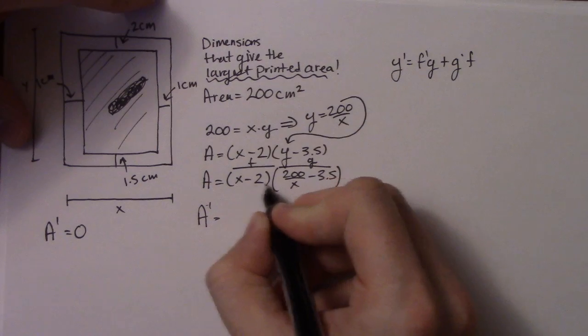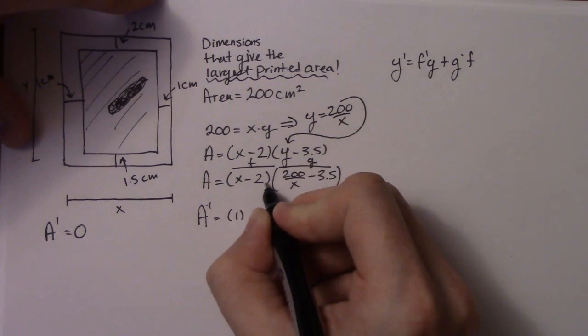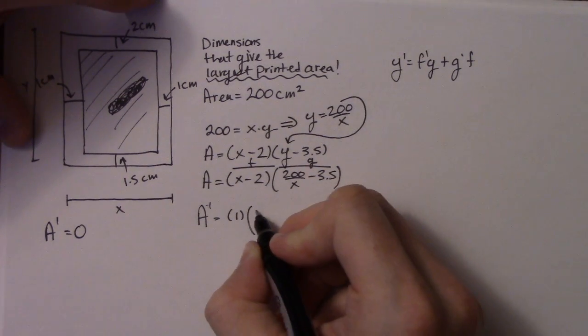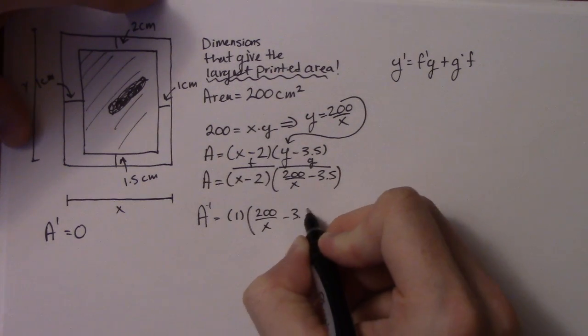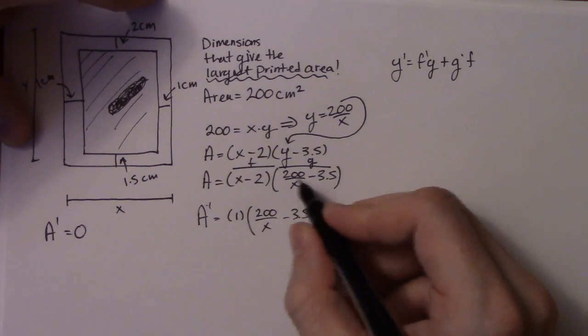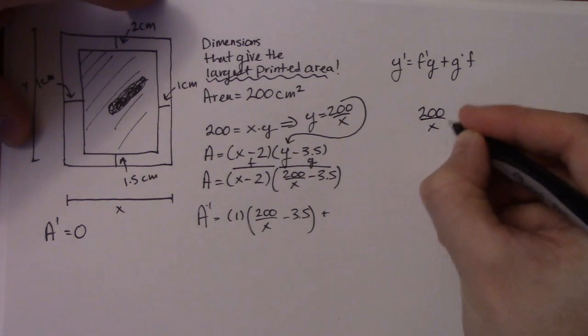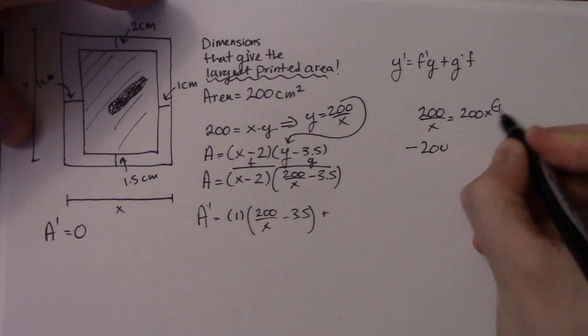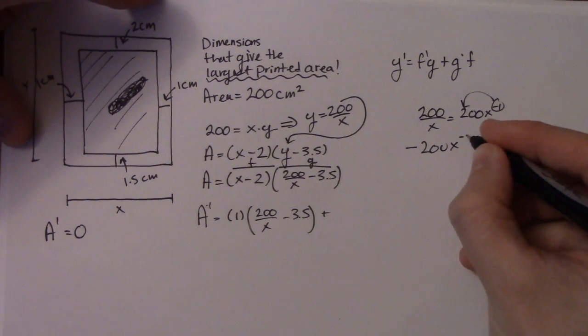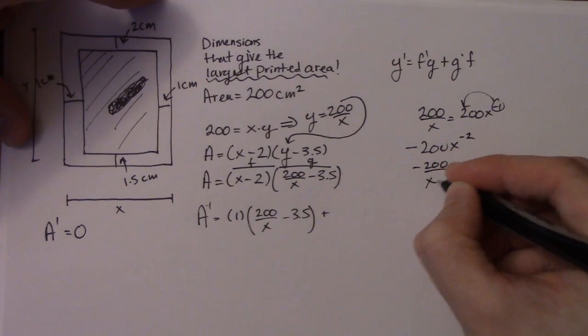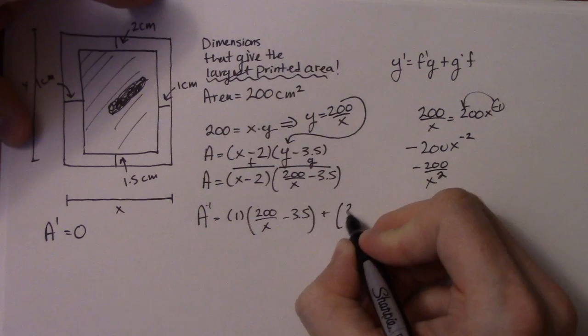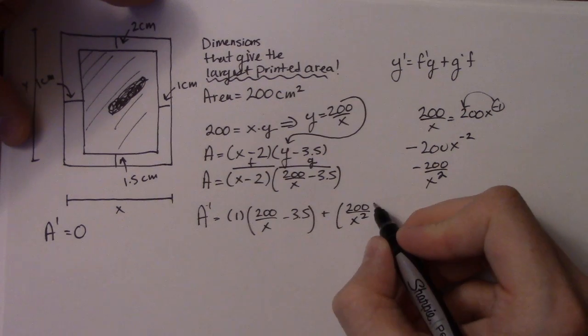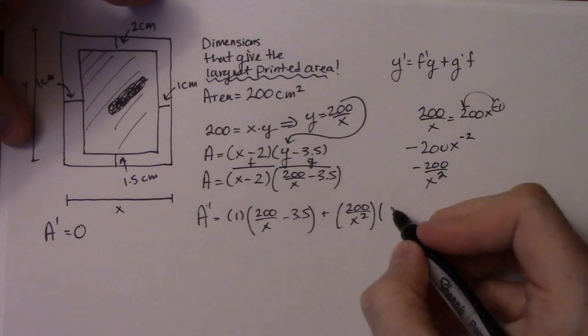So A prime: my f prime is just 1, so the derivative of x minus 2 is just 1, and then times g which is 200 over x minus 3.5, plus g prime. So g prime is a little more complicated. I got the 200 over x which is the same as 200x to the minus 1. So the derivative of this: negative 200, so the negative 1 comes down in front, and then I'm left with x to the minus 2, which is the same as negative 200 over x squared. So that will be 200 over x squared. Derivative of 3.5 is just nothing, so I don't need to put it in there.